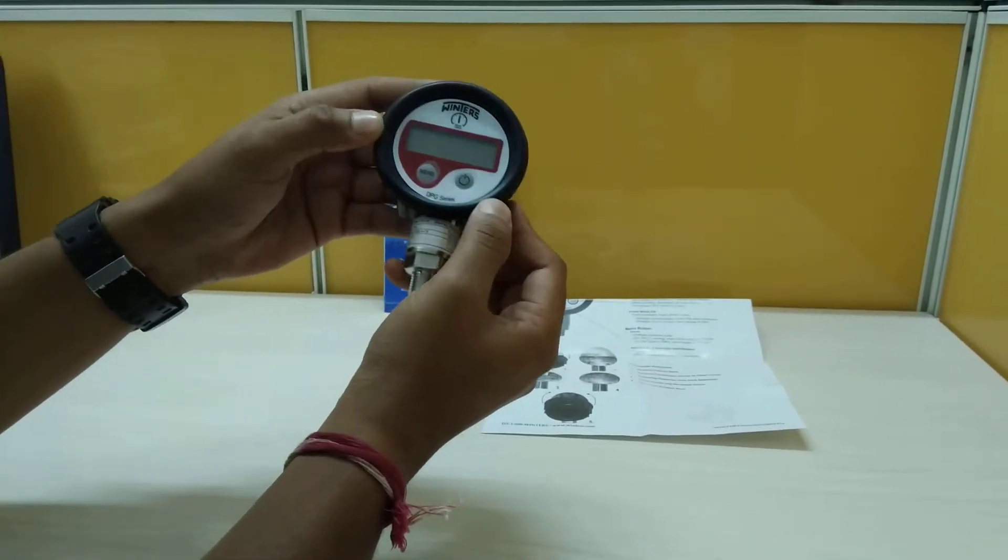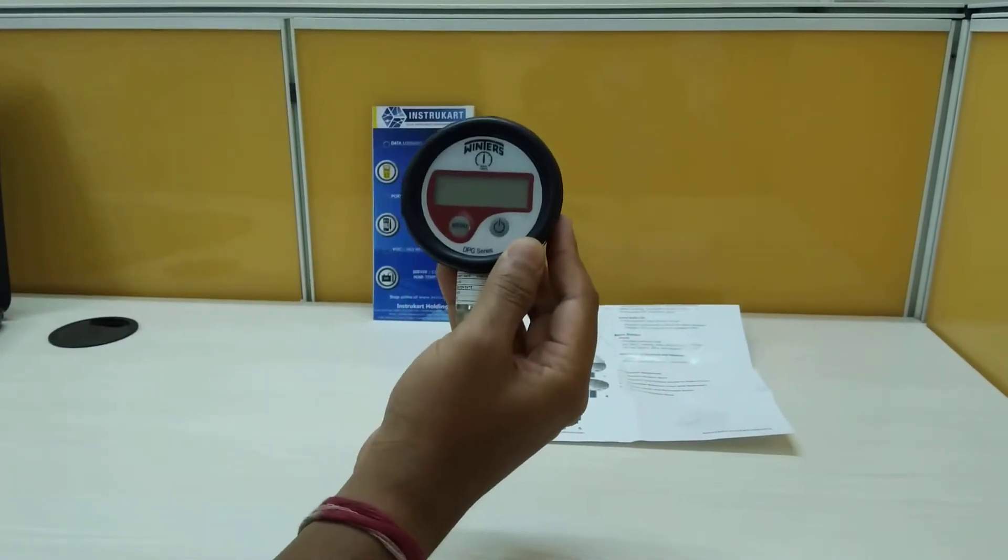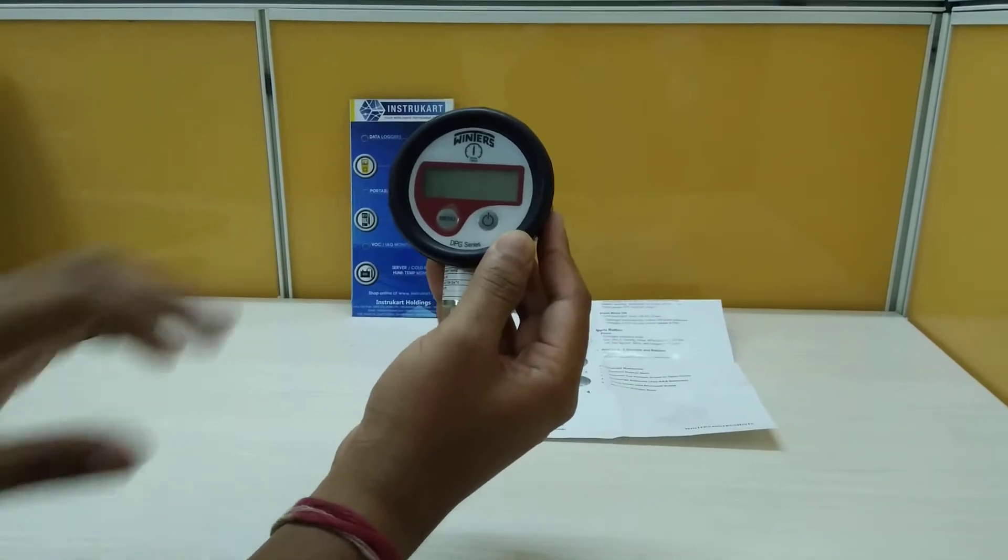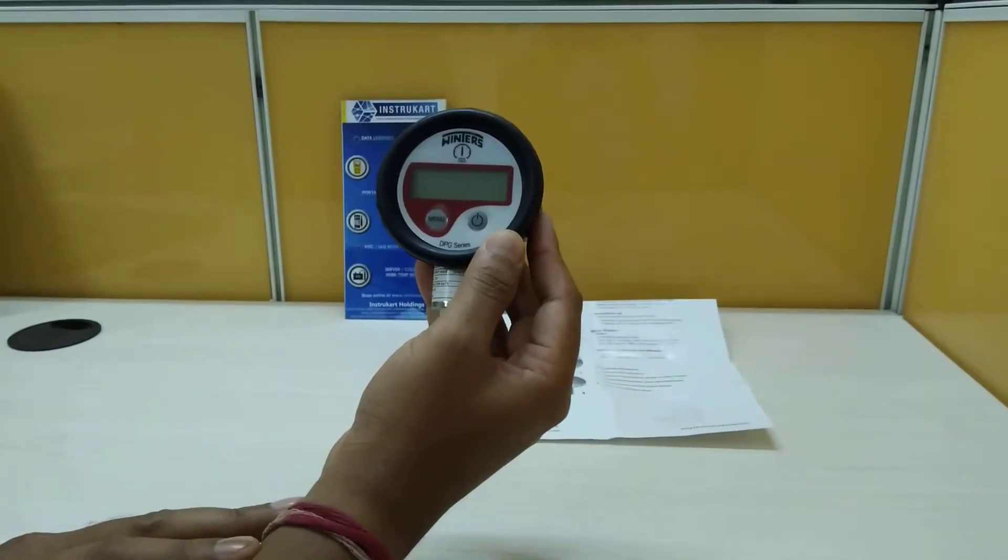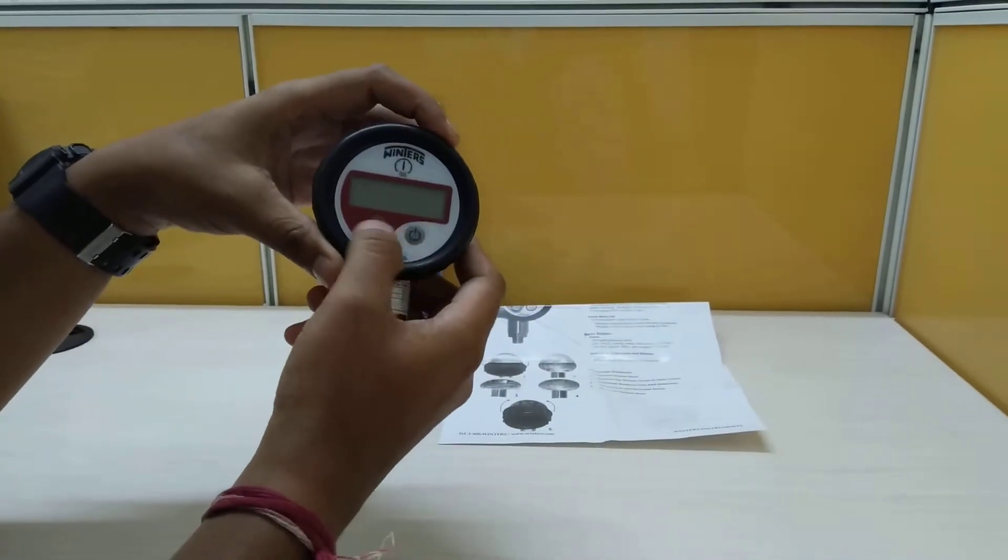The USPs of this pressure gauge is that the measuring range would be vacuum 0 to 760 mmHg and ranges between 0 to 1000 millibar which can be selected from the front key.